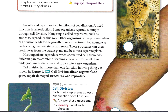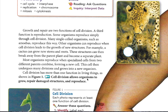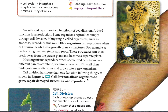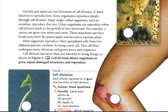Growth and repair are two functions of cell division. A third function is reproduction. Some organisms reproduce simply through cell division. Many single-celled organisms, such as amoebas, reproduce this way. Other organisms can reproduce when cell division leads to the growth of new structures. For example, a cactus can grow new stems and roots, which can break away from the parent plant and become a separate plant. Most organisms reproduce when specialized cells from two different parents combine, forming a new cell, which then undergoes many divisions and grows into a new organism. Cell division allows organisms to grow, repair damaged structures, and reproduce.